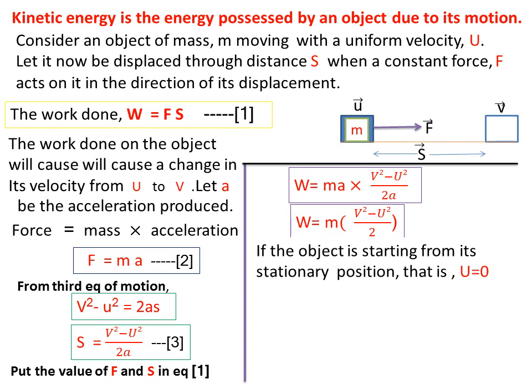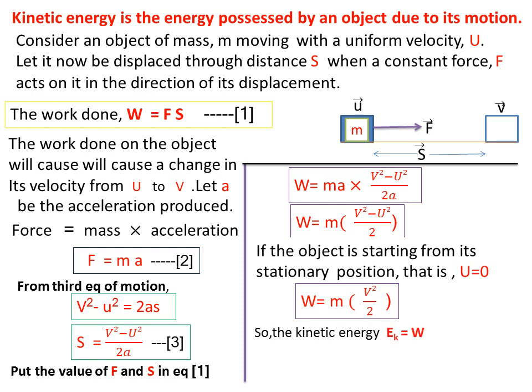Now if the object is starting from its stationary position, we assume u equals 0. Putting u equals 0, W equals mv² divided by 2. It is clear that the work done equals the change in kinetic energy of an object, so the kinetic energy Ek equals W, and Ek equals half mv squared. This is the formula of kinetic energy.